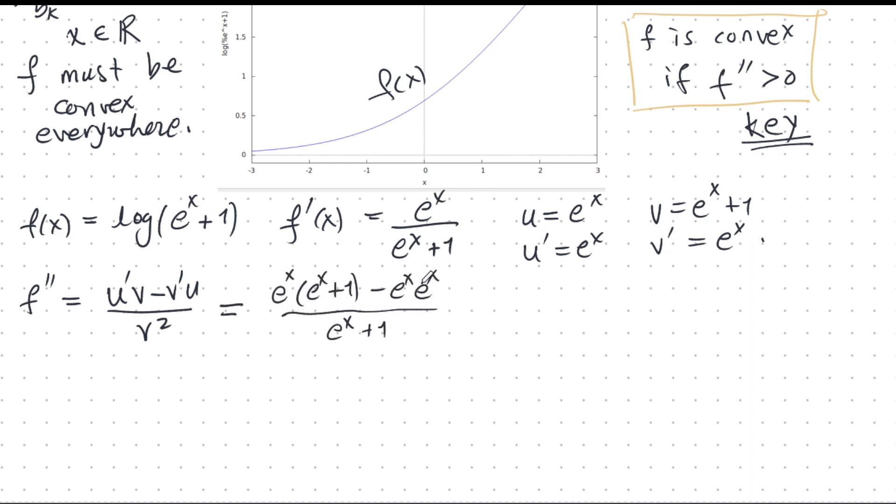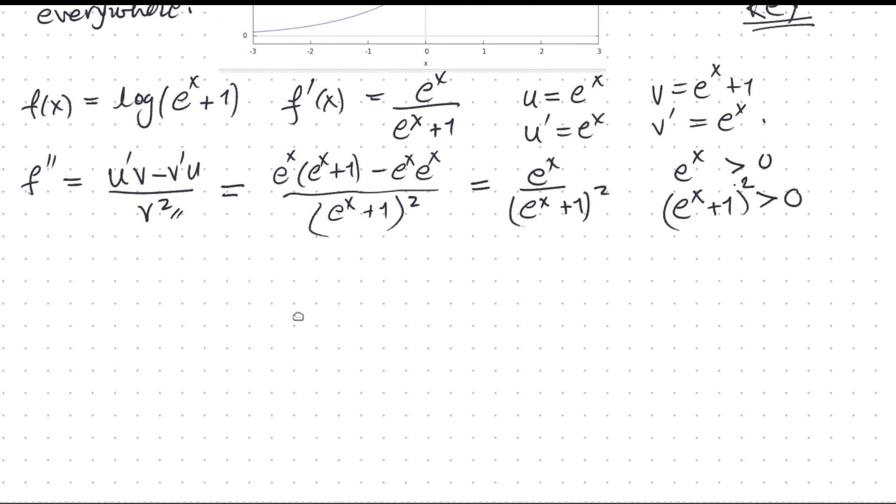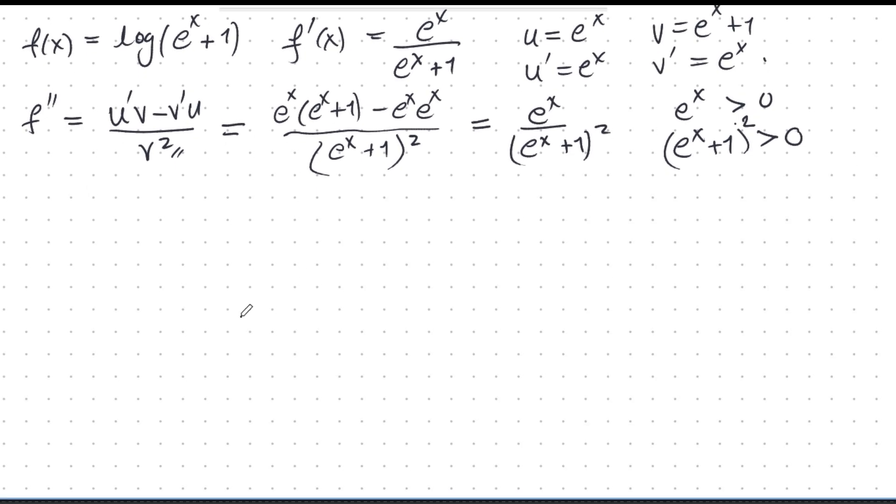What happens here is that this e^x times e^x disappears, and we get, let us not forget the square, we get this. Now, e^x is always positive everywhere, and of course, e^x + 1, this is always strictly, (e^x + 1)² is always strictly positive everywhere. And so, we can get the final answer now.